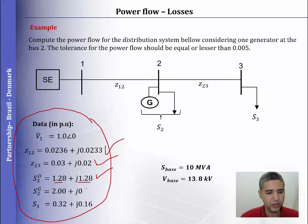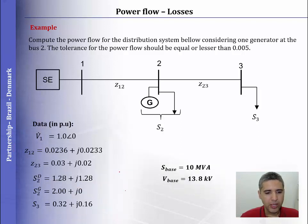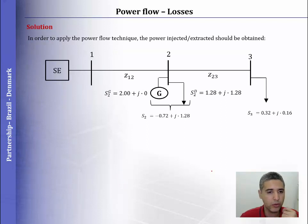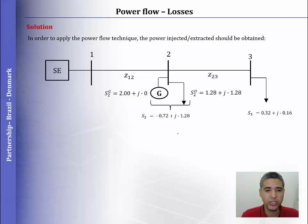Here in this side we have the data of the system: impedance from bus 1 to bus 2, impedance from bus 2 to bus 3. This is the load — the active and reactive part of the load. This is the generation. Note that we don't have the reactive part of the generator, but we can put it if you want. We need to compute the net value of the injection or extraction in each node.